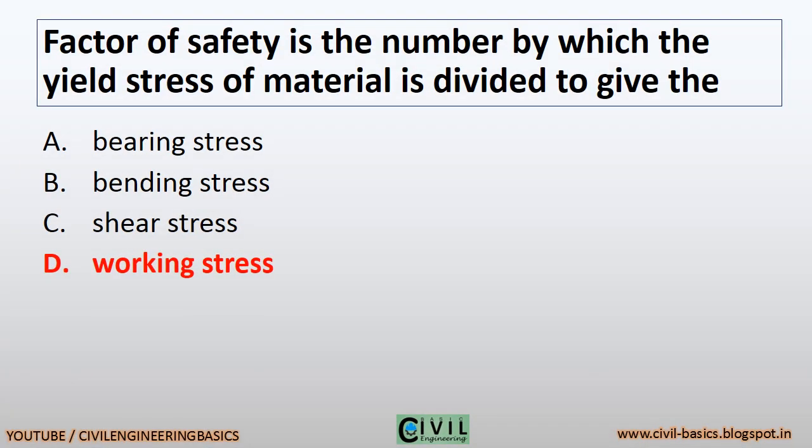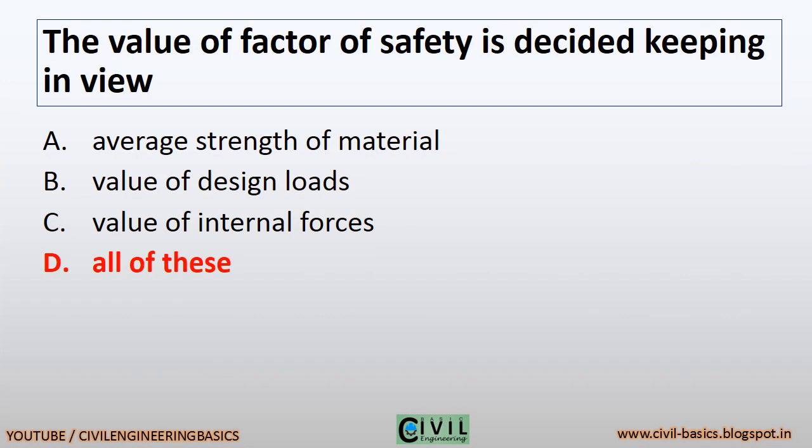Factor of safety is the number by which the yield stress of material is divided to give the working stress. The value of factor of safety is decided keeping in view: average strength of material, value of design loads, value of internal forces — all of these.